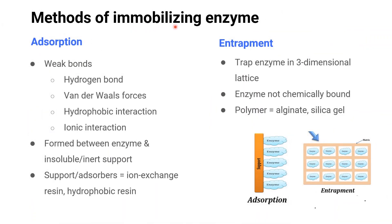There are a few methods of immobilizing enzymes. Adsorption: the enzyme is attached to the outside of an inert material. This is the oldest method of enzyme immobilization — it is straightforward and the simplest. Enzymes are physically absorbed or attached onto a support material. Weak bonds such as hydrogen bonds, van der Waals forces, hydrophobic interactions, and ionic interactions are formed between the enzyme and the insoluble support. Supports or adsorbents include ion exchange resins and hydrophobic resins. There are no pore diffusion limitations since enzymes are immobilized externally.